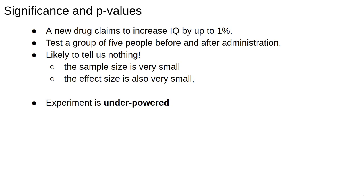In reality, this experiment is likely to tell us nothing. The sample size is very small, and the effect size is also very small. We say the experiment is underpowered. This means it can't answer the question we wanted to answer. If we can't modify the drug, we need to recruit more test subjects.